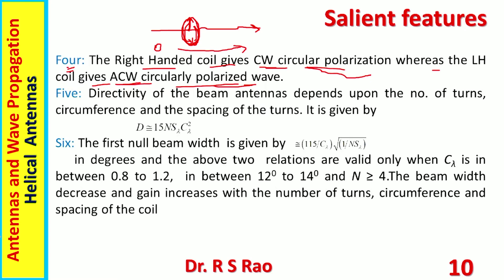Moving to point five: directivity of the helical beam antenna depends upon the number of turns, circumference, and spacing of the turns. It is given by the formula D = 15N × S/λ × (C/λ)². Here S/λ means S in terms of wavelength and C/λ means C in terms of wavelengths. So more turns means more directivity; more S/λ means more directivity; more C/λ means more directivity.